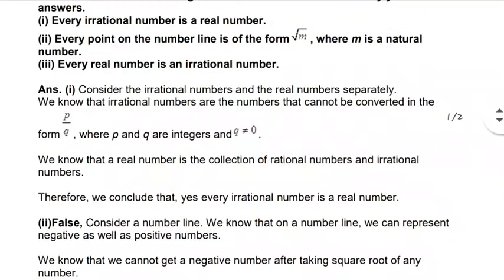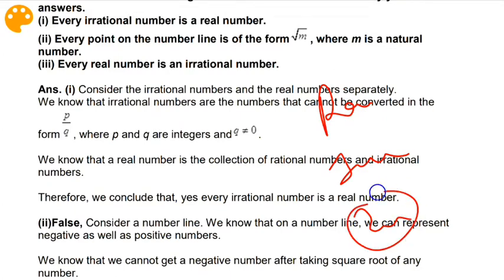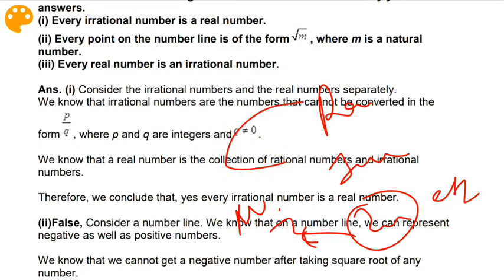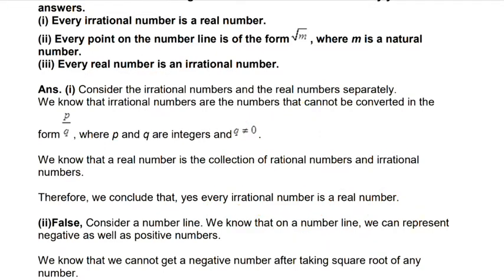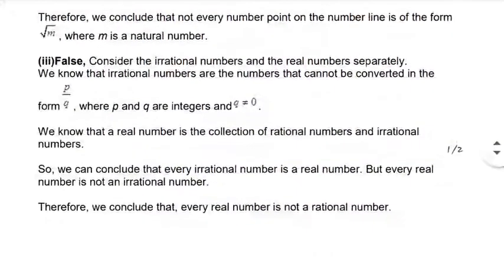Question number three: every real number is an irrational number. Real numbers contain rational numbers, irrational numbers, and integers — and integers further contain natural numbers, whole numbers, etc. Real number is a collection of rational, irrational, and integers. So all real numbers are not irrational numbers. The answer is false.